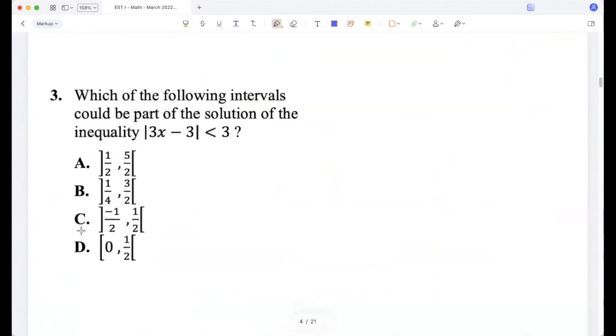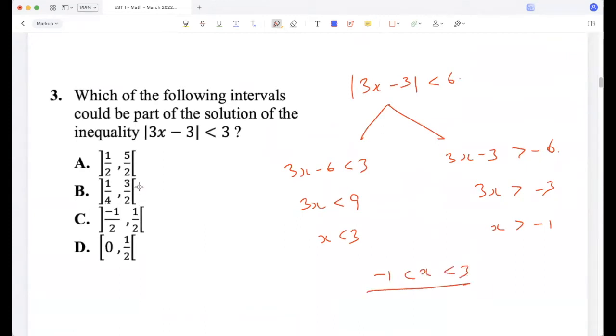Which of the following intervals could be part of the solution of the inequality |3x - 3| < 6? So 3x minus 3 could be less than 6, or 3x minus 3 could be greater than minus 6. So 3x is less than 9, x is less than 3, or 3x is greater than minus 3, so x is greater than minus 1. So minus 1 less than x less than 3 is the solution set, minus 1 to 3, right?